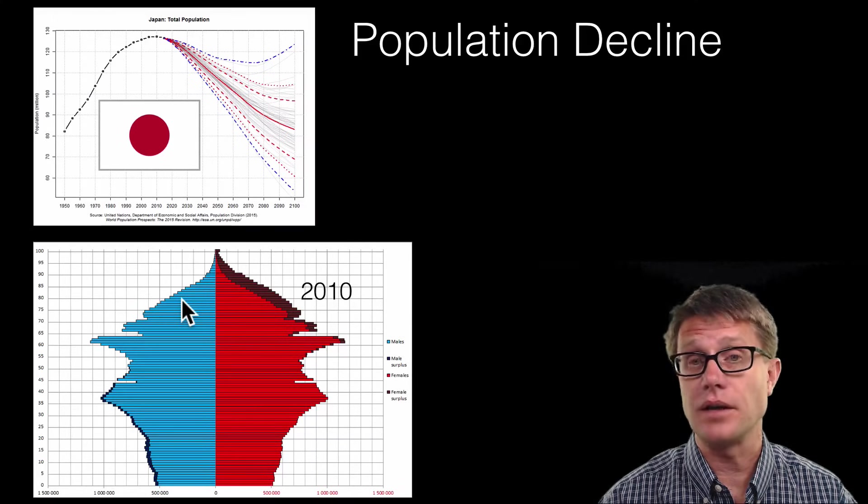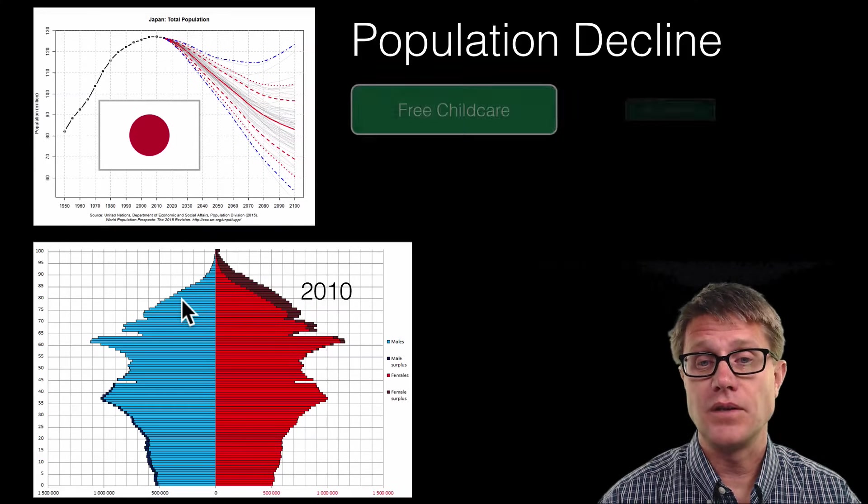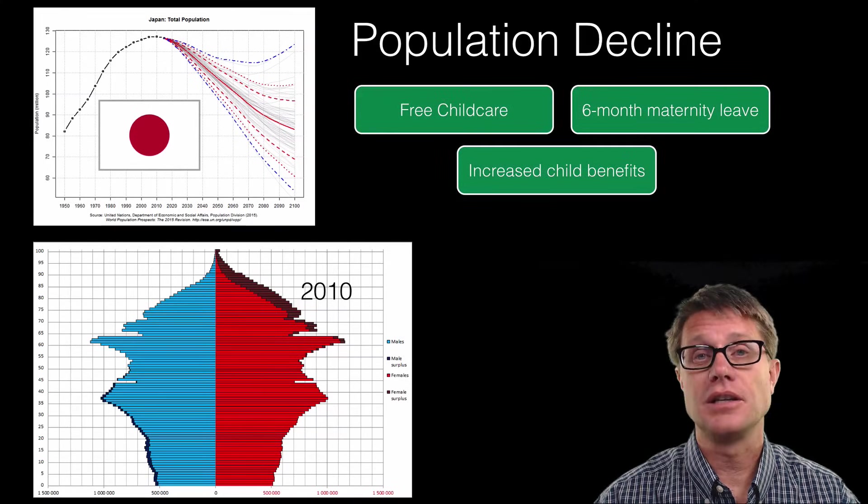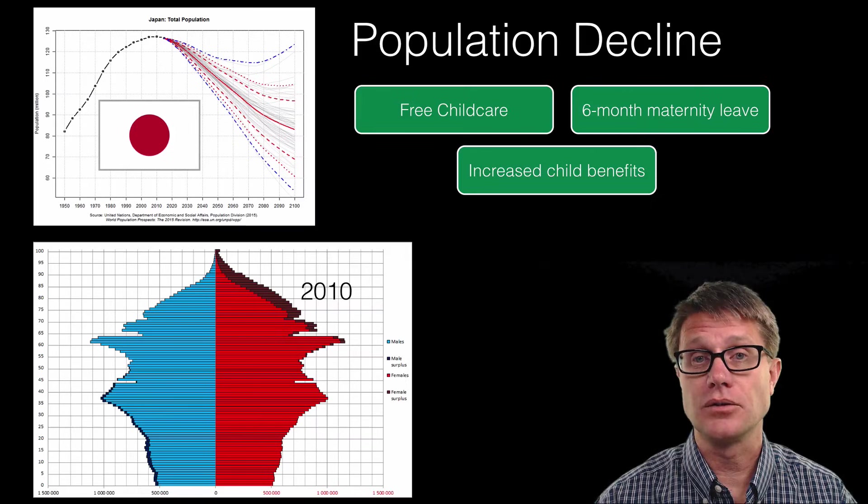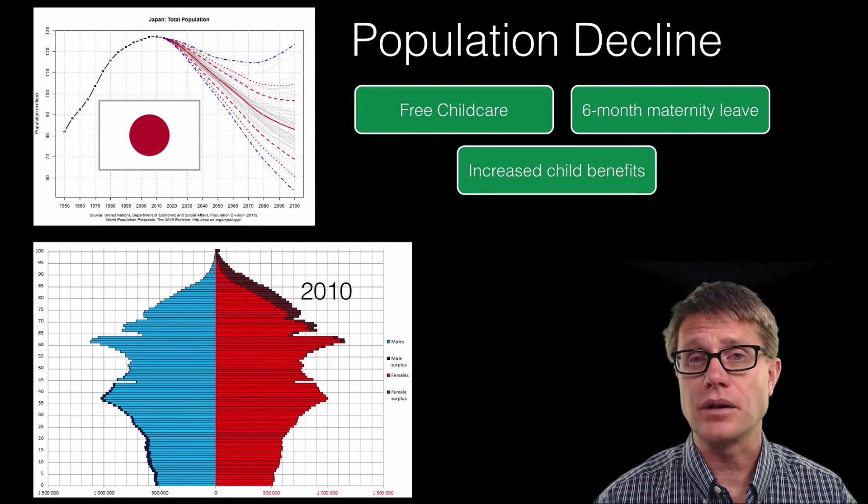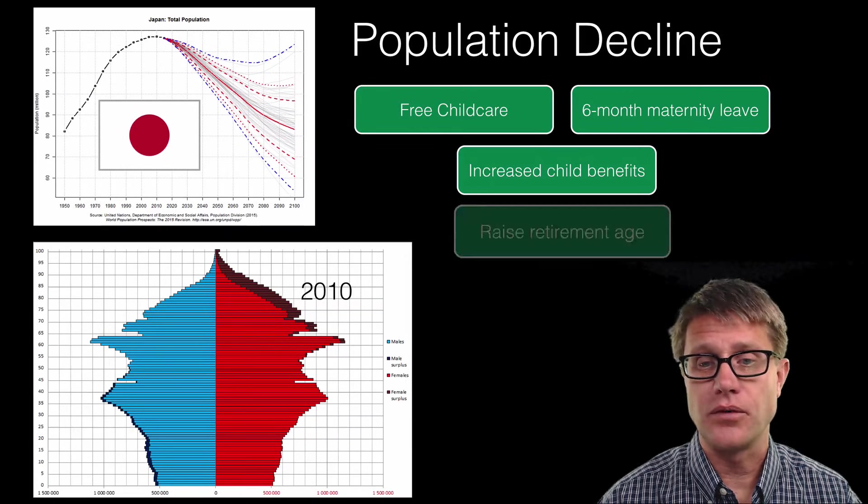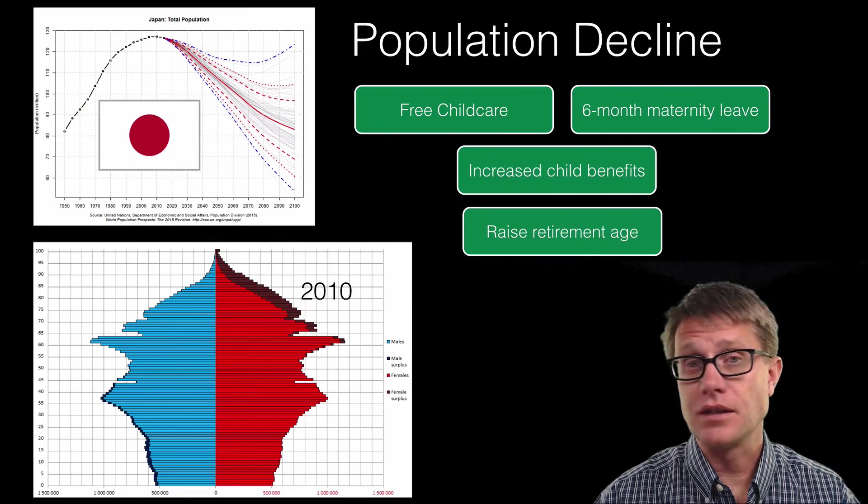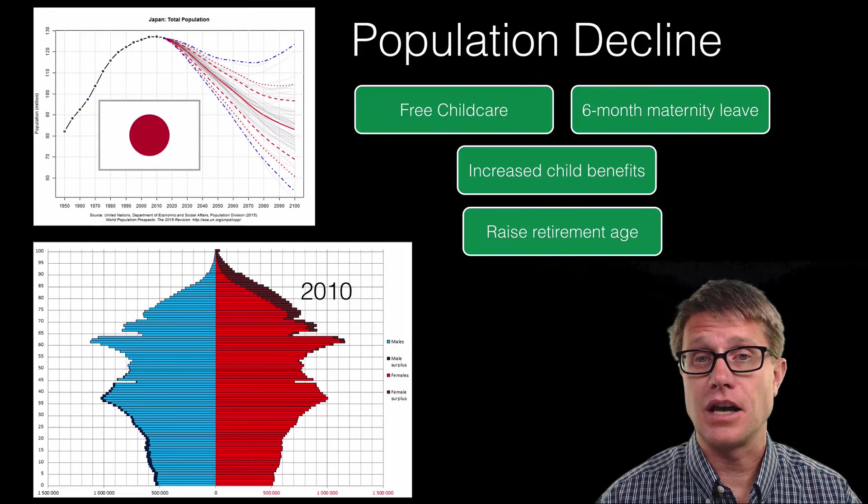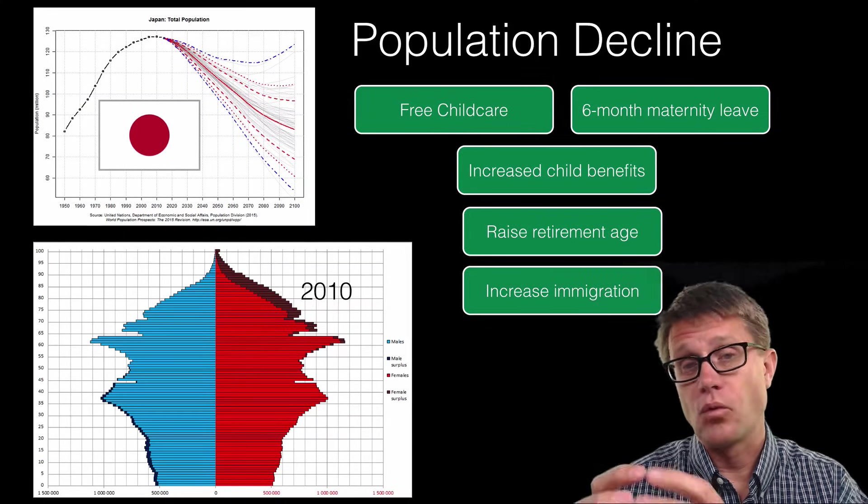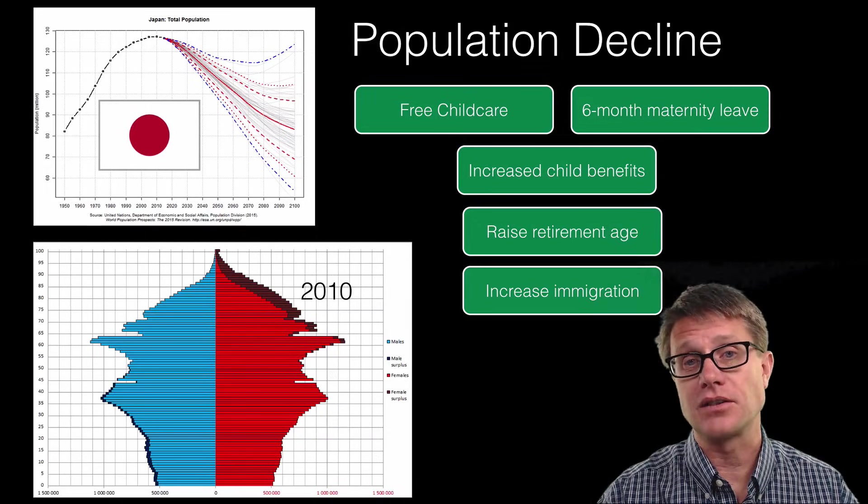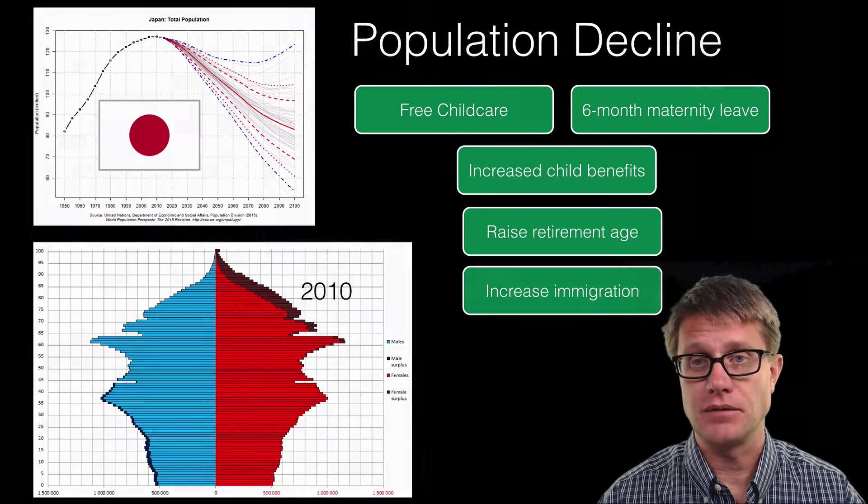So what have they done? They want them to have more kids. And so they have instituted free childcare, maternity leave, increased benefits if you have children. And a lot of this is really not working in Japan. So now they are going to have to put forward ideas of like raising the retirement age. And eventually they are going to have to increase immigration. Because their workers are going to quickly fall back to the level of where they were in the 1950s.